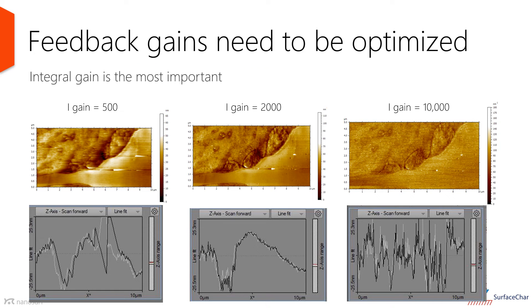Feedback gain is the last, but not the least, parameter to be optimized. The image acquired with ideal gain is shown in the middle of the slide. Too low a gain results in smears and streaks, most evident when comparing line profiles of forward and reverse scans, which do not match when gain is too low — the feedback loop is too slow and cannot faithfully track the surface. Too high a gain causes self-excitation of the feedback loop, producing noise known as ringing, seen as high-frequency oscillation in the line profile.